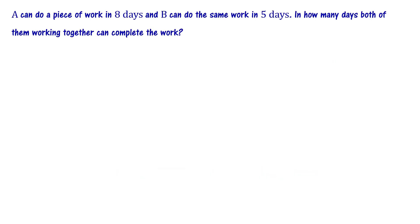A can do a piece of work in 8 days. B can do the same work in 5 days. In how many days can both of them working together complete the work?